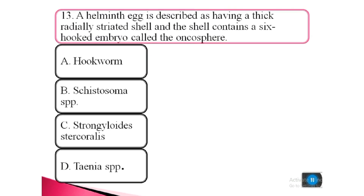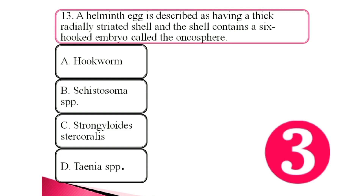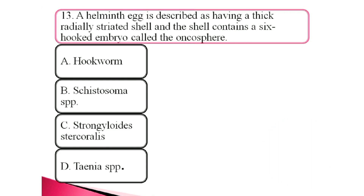Question 13. A helminth egg is described as having a thick radially striated shell, and the shell contains a six-hooked embryo called an oncosphere: a. hookworm, b. Schistosoma species, c. Strongyloides stercoralis, d. Taenia species. The answer is...